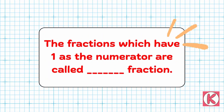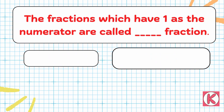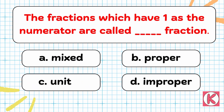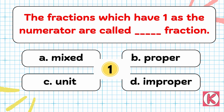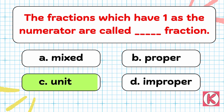Question No. 1. The fractions which have 1 as the numerator are called dash fraction. Correct answer: Option C — Unit fraction.